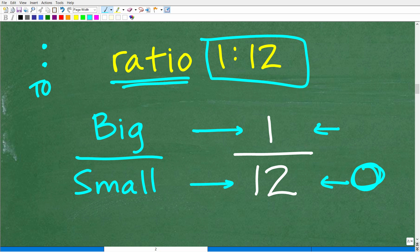Basically, the small gear has got to turn 12 times to make the big gear turn once. This is our ratio, one to twelve ratio.